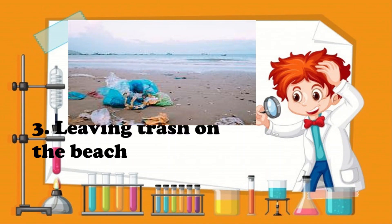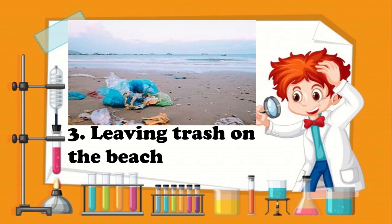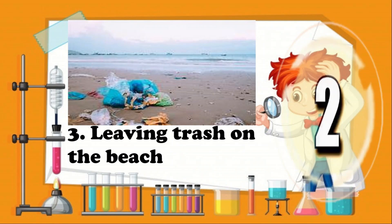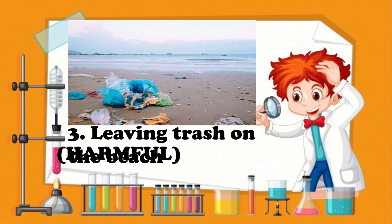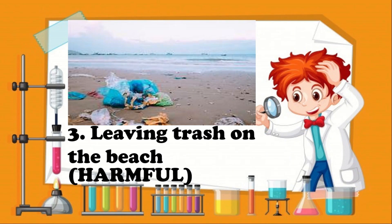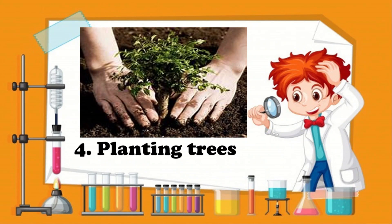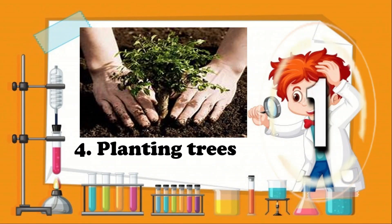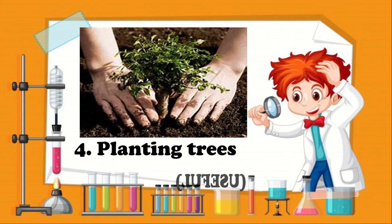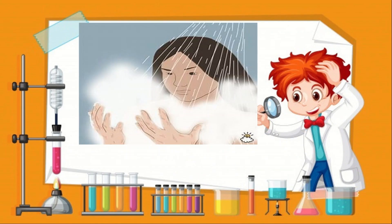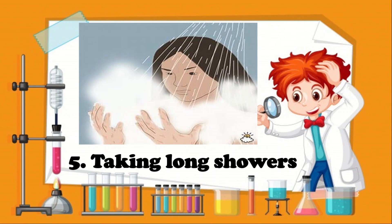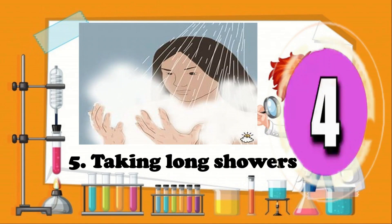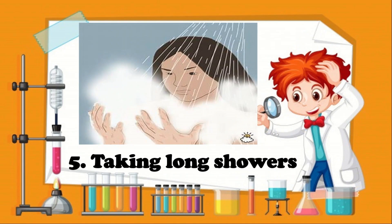Number 3: Leaving trash on the beach. The correct answer: Harmful. Very good! Number 4: Planting trees. The correct answer: Useful. Very good! And for number 5: Taking long showers. The correct answer: Harmful. Very good! How many of you were able to get an amazing score?